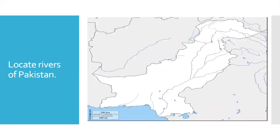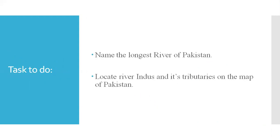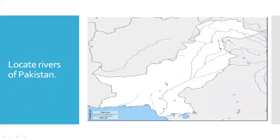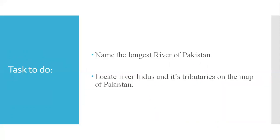Now here is a task for you. This is a blank map of Pakistan. You are going to locate all the eastern and western tributaries of River Indus and label them. There are two questions: number one, name the longest river of Pakistan; and number two, locate River Indus and its tributaries on the blank map of Pakistan provided.